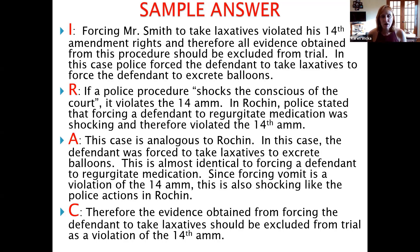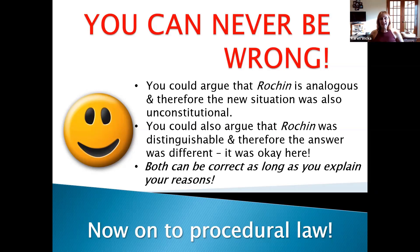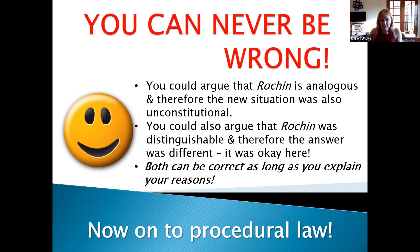This is a hard process — we have to get our minds thinking in a very specific way. The more you do it throughout the class, the better you'll get. There may not be an exact right argument — you could argue Rochin is analogous and therefore unconstitutional. If arguing for the state, you could argue it's distinguishable and therefore should be okay even though Rochin wasn't. Both can be correct because we are a dual-party system with prosecutors and defense — but we always want to argue from a defense perspective in this class.